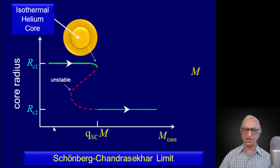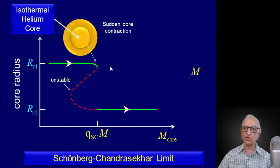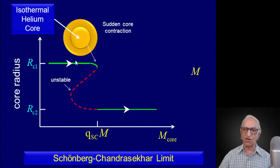The core has a certain small mass initially with a fairly large radius, and the core grows in mass. As the core grows in mass, the radius remains more or less the same until it reaches the point of inflection, when something dramatic happens. The core suddenly contracts because this is an unstable region — the dashed red line represents an unstable branch of this zigzag curve. Therefore, the core will suddenly contract.